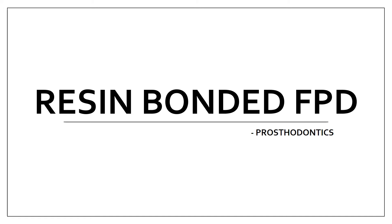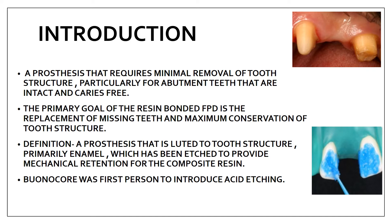The topic is resin bonded fixed partial dentures from prosthodontics. This was introduced to minimize the major drawback of conventional FPD, which was the destruction of sound tooth structure. In conventional FPD, tooth preparation on the abutment is very extensive, damaging a good tooth. Resin bonded FPD is a prosthesis that requires minimal removal of tooth structure, particularly for abutment teeth that are intact and caries free.